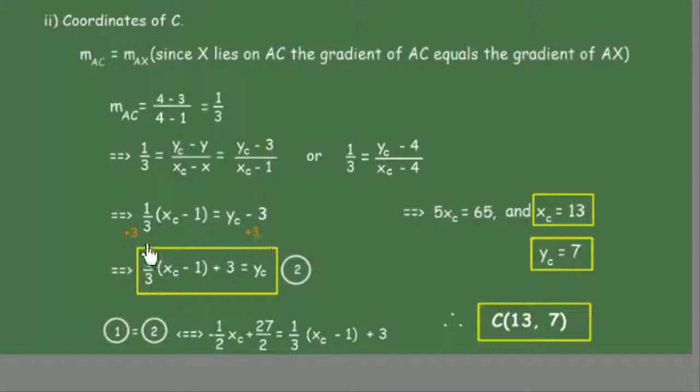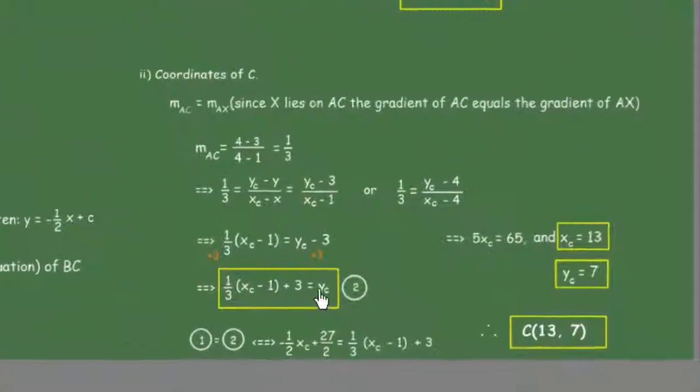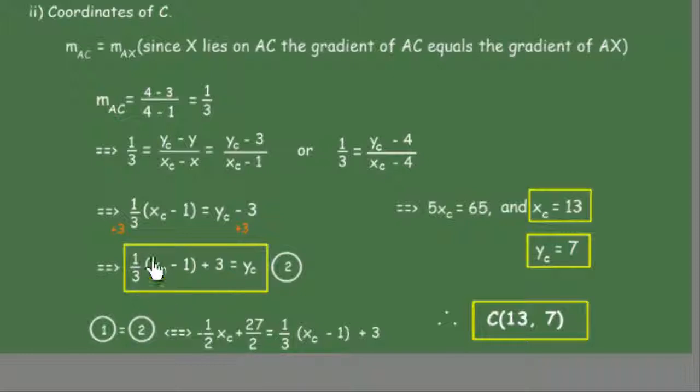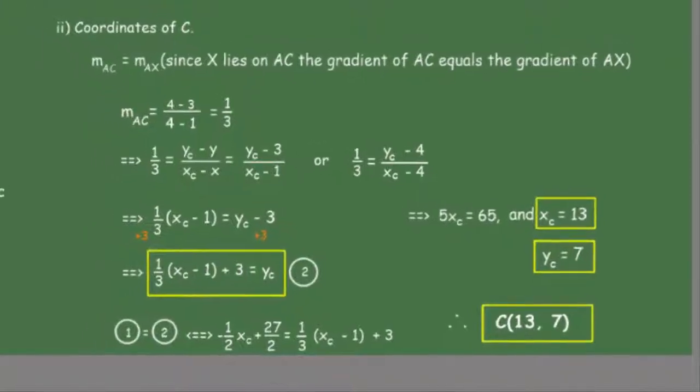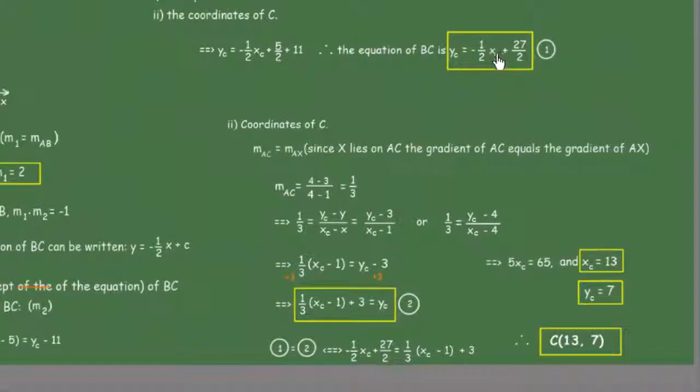Adding 3 to both sides gives 1/3(x_C - 1) + 3 = y_C. We have y_C = 1/3x_C - 1/3 + 3, and from equation 1, y_C = -1/2x_C + 27/2.